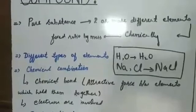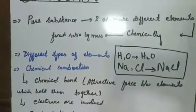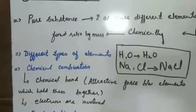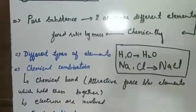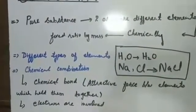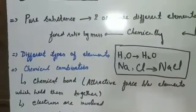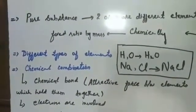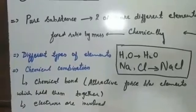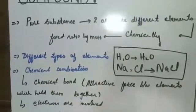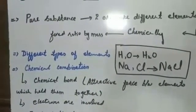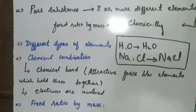The next thing is chemical combination — these different types of elements combine together by means of a chemical combination. This combination is due to certain attractive forces between the elements. This attraction is called a chemical bond — the attractive force between elements which holds them together by means of electrons. When electrons are involved, there is a chemical reaction, so hydrogen and oxygen react chemically to form the H2O compound.